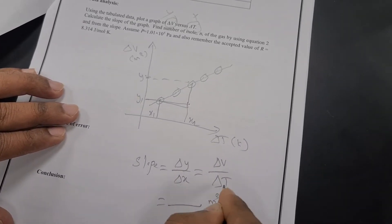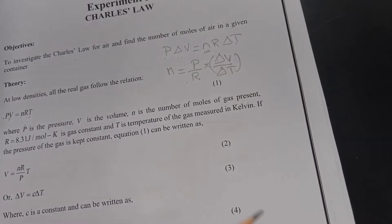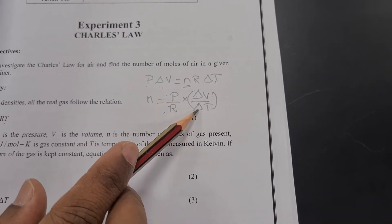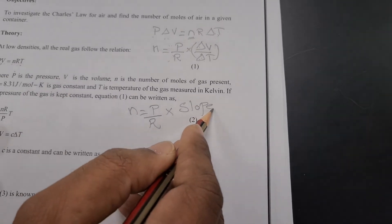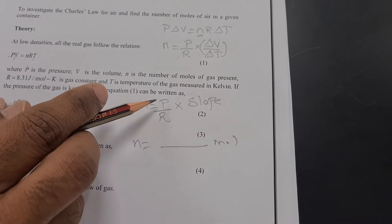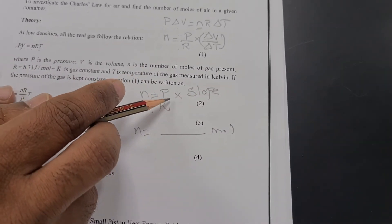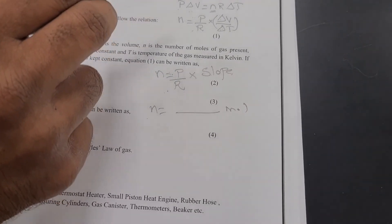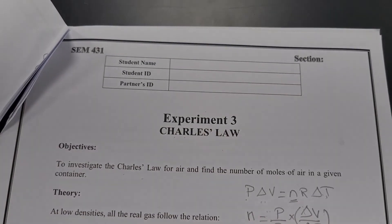The slope unit is m³/K. Once you find the slope, go back to our equation: n = (P/R) × (ΔV/ΔT). Since the slope equals ΔV/ΔT, you can write: n = (P/R) × slope. The P value is 1.01 × 10⁵ Pa, R is 8.314 J/(mol·K), and the slope you get from the graph. Substitute the values to find n, the number of moles of gas present inside the container. That is the complete procedure for Experiment 3: Charles Law.